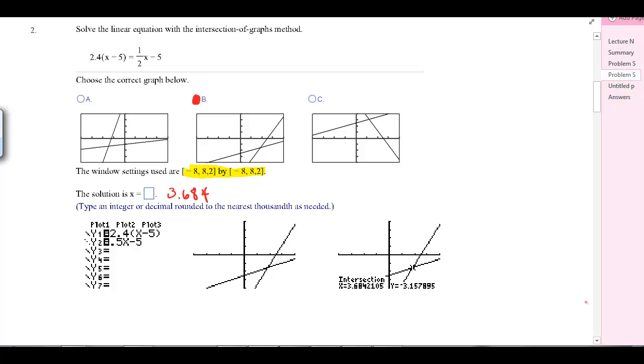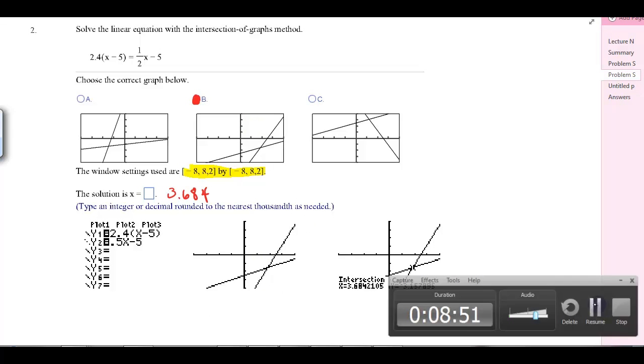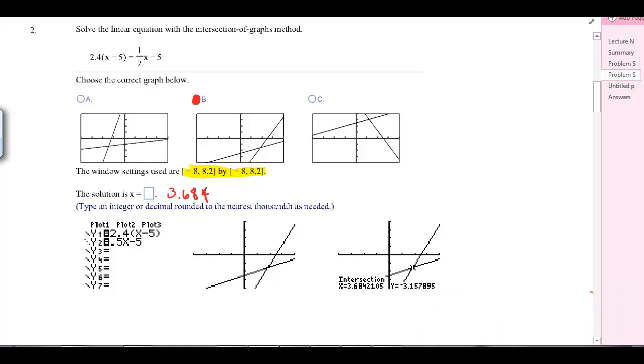Number two would be the same kind of problem. You would put it into your calculator. I used 0.5 instead of the fraction and got a picture that I could match, which was B. When you're asked to find the solution, you do the same thing. Here's the x value of that intersection, rounded to the thousandth is 3.684.